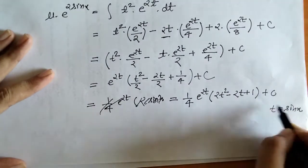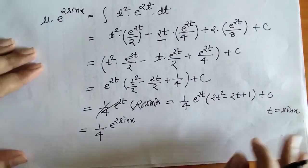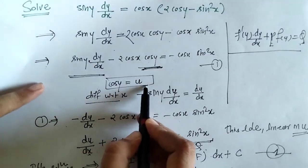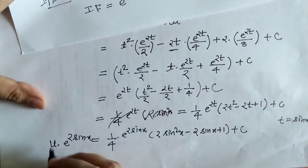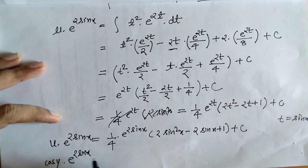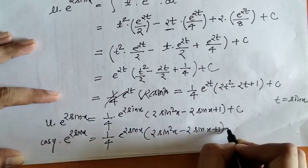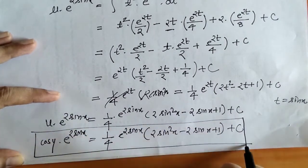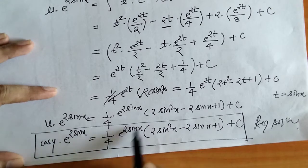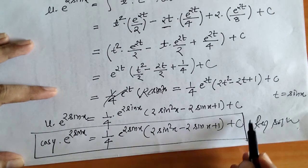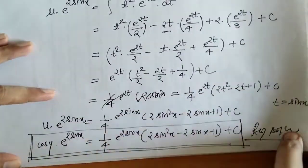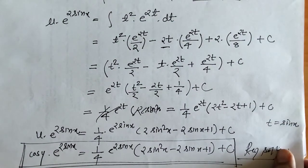After applying integration by parts and simplifying, we factor out e^(2t) and substitute back t = sin x. Since u = cos y, we replace u with cos y. We can further simplify by cancelling e^(2 sin x), giving the required solution: cos y = (some expression) + C·e^(−2 sin x).